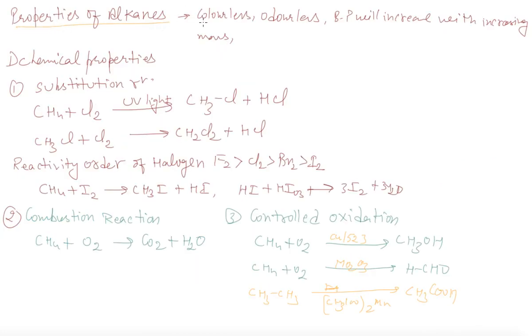Now, the properties of alkane. General properties are they are colorless, odorless, and their melting and boiling point will increase with increasing the mass.